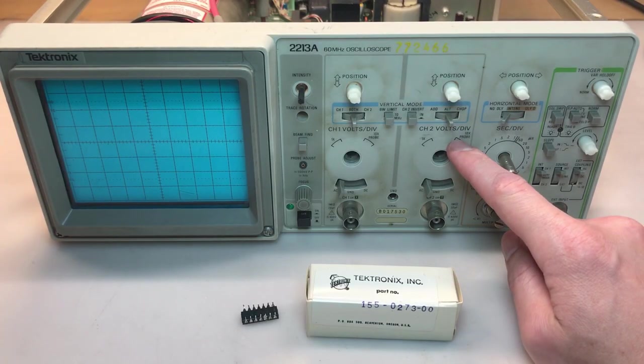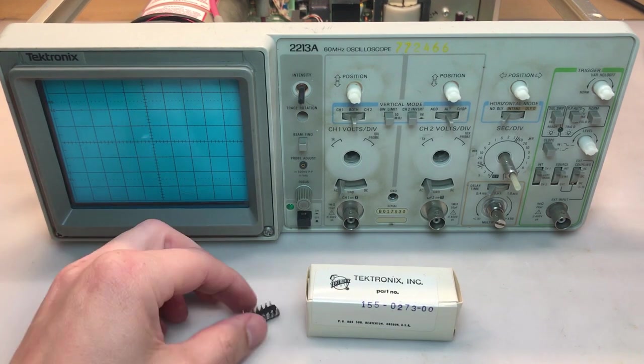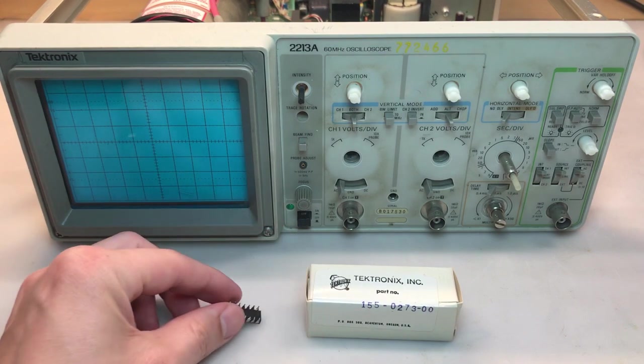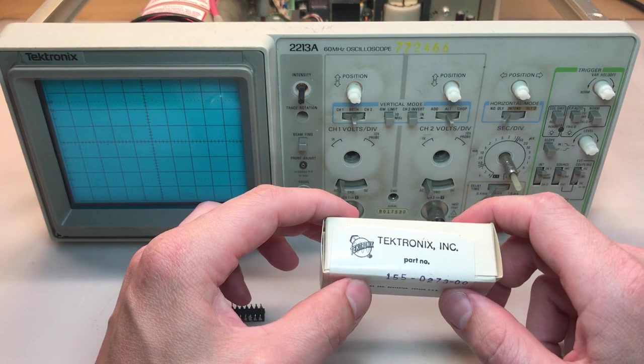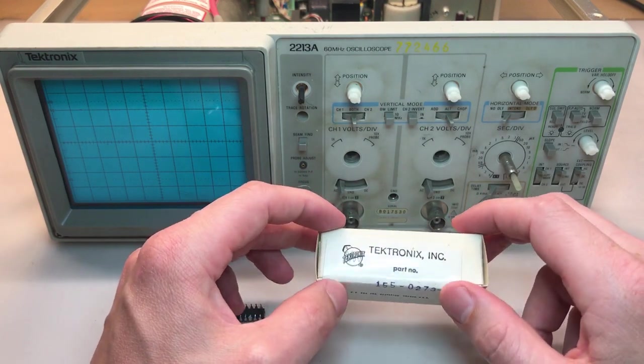I was unable to replicate the problem I was seeing earlier with channel 2, so I'm going to ignore that for the moment. I was able to find a replacement for U30. This is the old one. I was able to remove it after quite a bit of effort. And the new one came in this genuine Tektronix box and was advertised as brand new. So we'll see if that works.